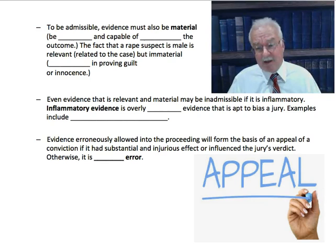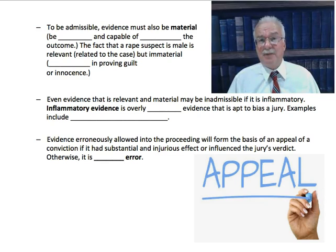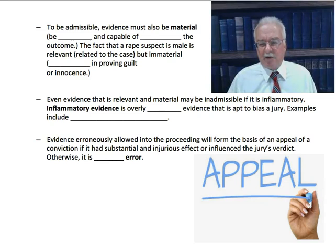For example, in a rape trial, a prior arrest for sexual abuse where there was no conviction would be inadmissible. If the jury heard it, it would prejudice them and would probably result in a mistrial.